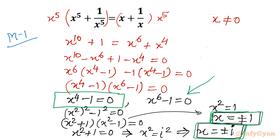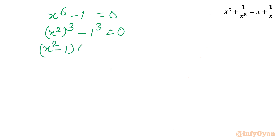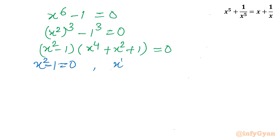Now let us consider the second equation: x power 6 minus 1 equal to 0. We can write x square whole cube minus 1 cube equal to 0, and apply the difference of two cubes formula: a cube minus b cube equals (a minus b)(a square plus b square plus ab) equal to 0. From f times g equal to 0, we get x square minus 1 equal to 0 and x power 4 plus x square plus 1 equal to 0.